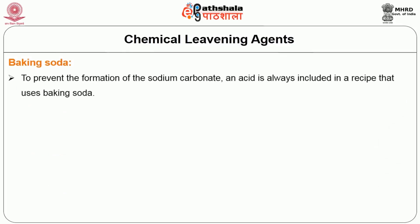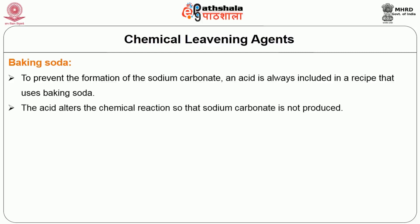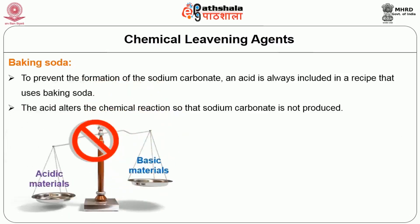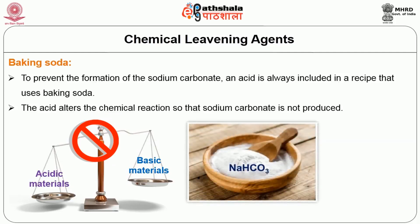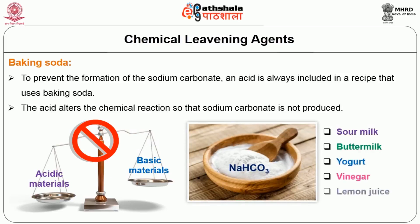To prevent the formation of sodium carbonate, an acid is always included in a recipe that uses baking soda. The acid alters the chemical reaction so that sodium carbonate is not produced. However, precaution is needed to avoid imbalance between the acidic and basic material in the formulation. Some acid ingredients that may be used along with baking soda include sour milk, buttermilk, yogurt, vinegar, lemon juice, or cream of tartar. Baking powder, comprising an alkali and acid salt, is more frequently used in baking.